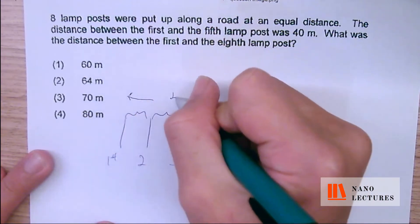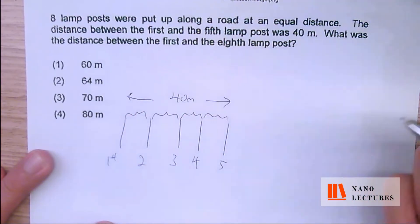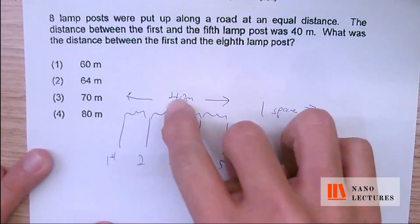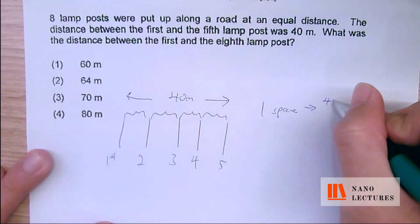And the distance is 40 meters. Which means that 1 space will be what? 4 spaces is 40 meters. So 1 space will be 40 meters divided by 4, that will give us 10 meters per space.